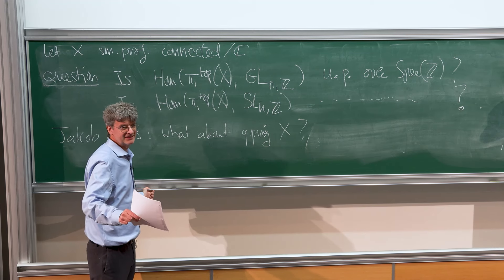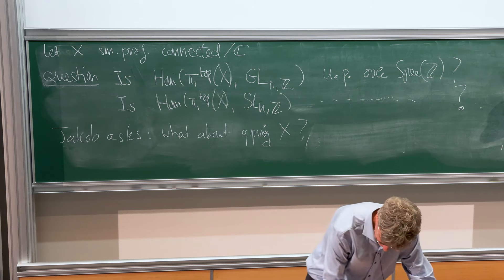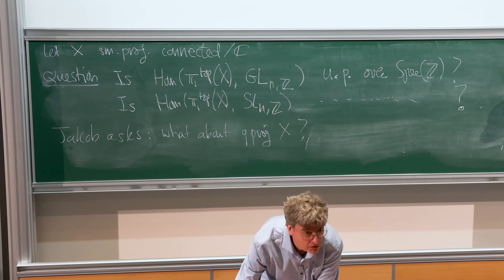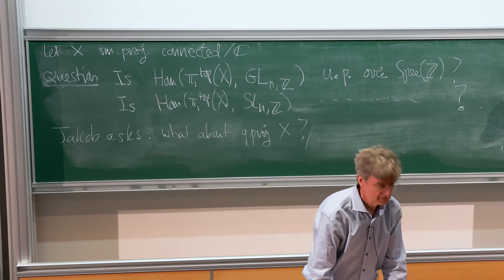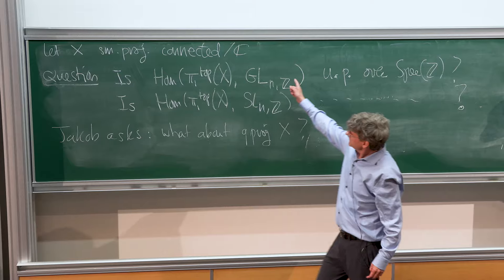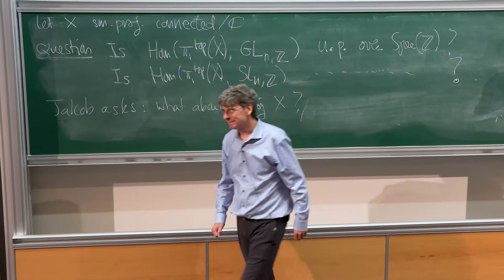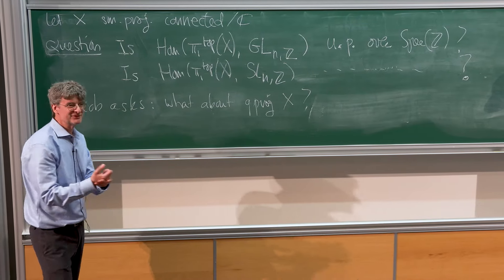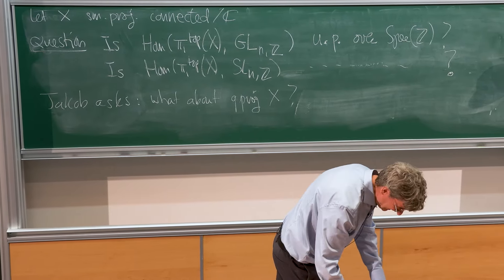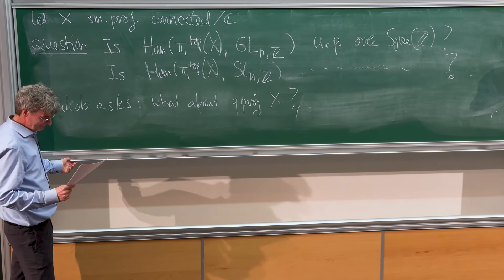Just a tiny comment: rigidity is taken really in this quotient. Here it's never rigid, the example. This always has positive dimension somehow, except if the trivial representation is rigid. All right.